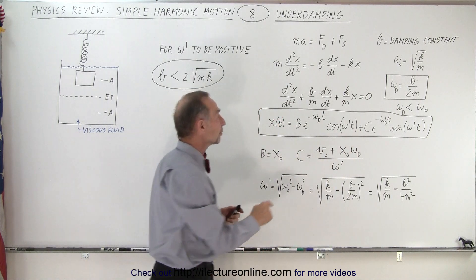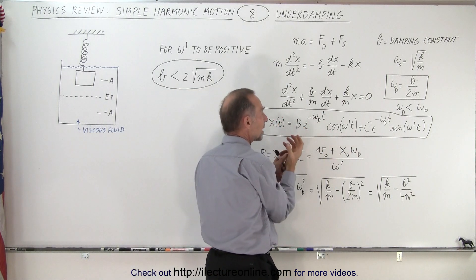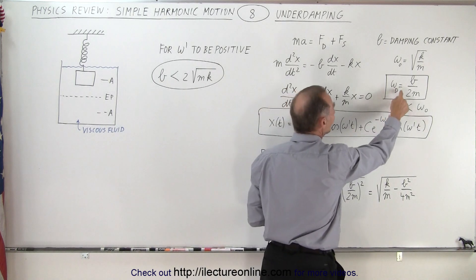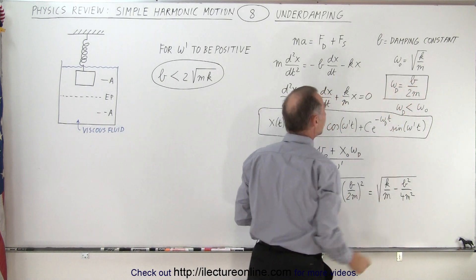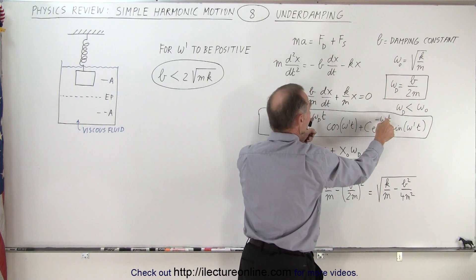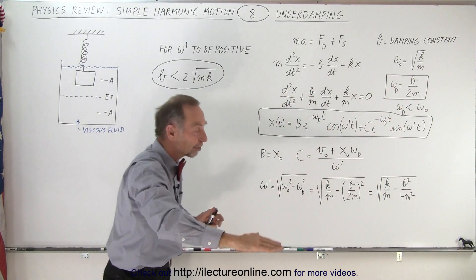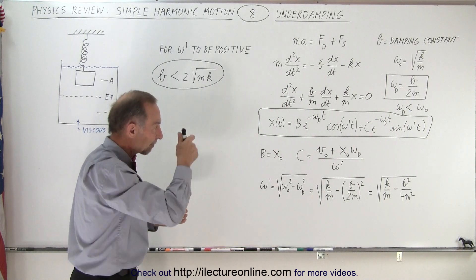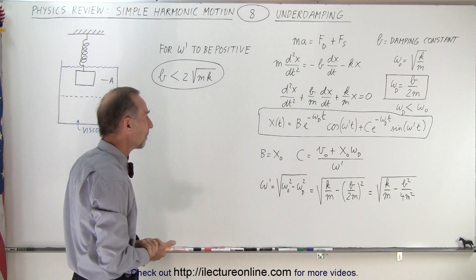Now notice the equation for omega sub D, which is the omega caused by the damping, is equal to the damping constant divided by 2M. That goes into the exponent. Again, the bigger B, the bigger the value here. Since it's negative, that means that the exponential decay goes quicker and you have less oscillations before you come to a stop.